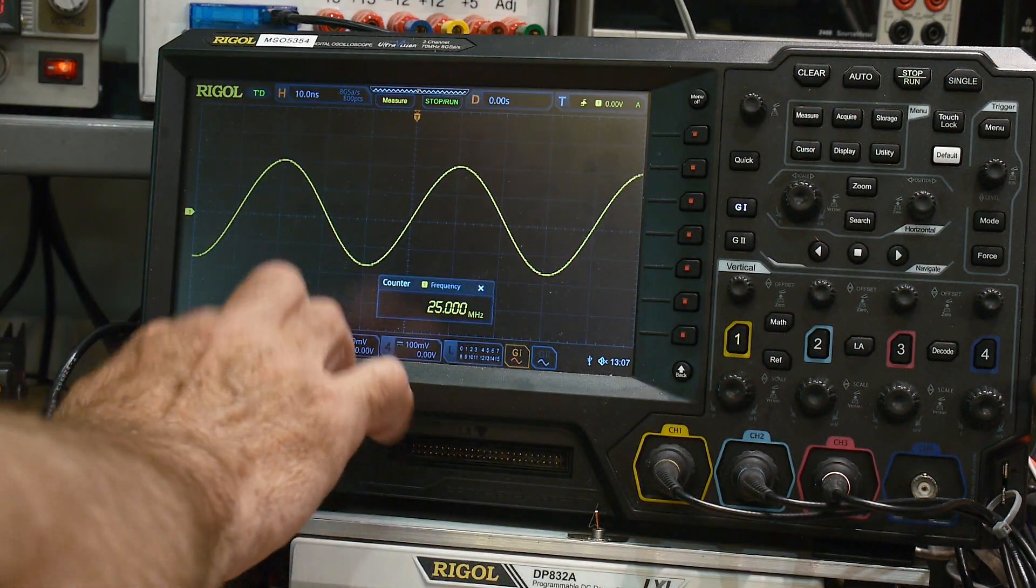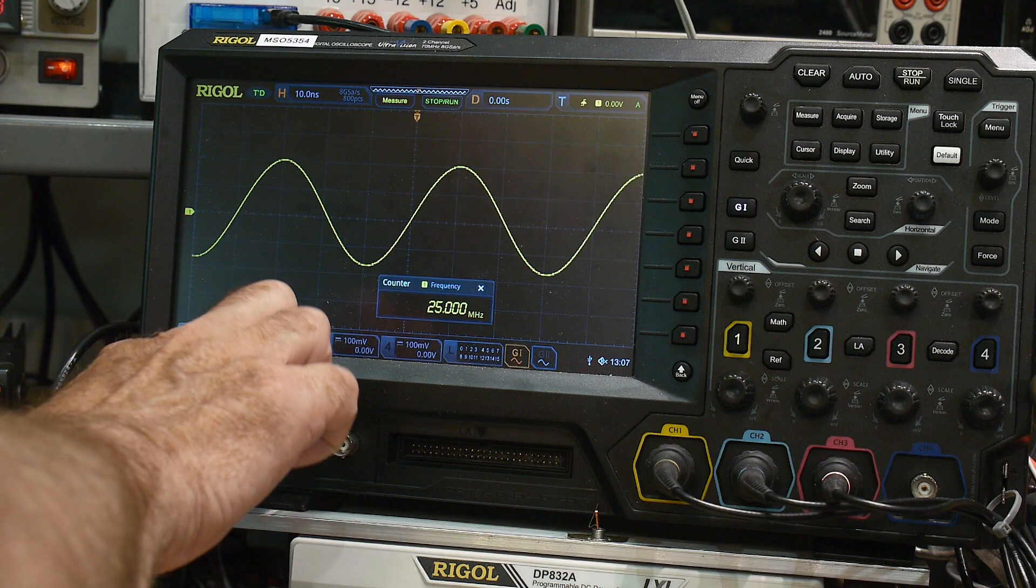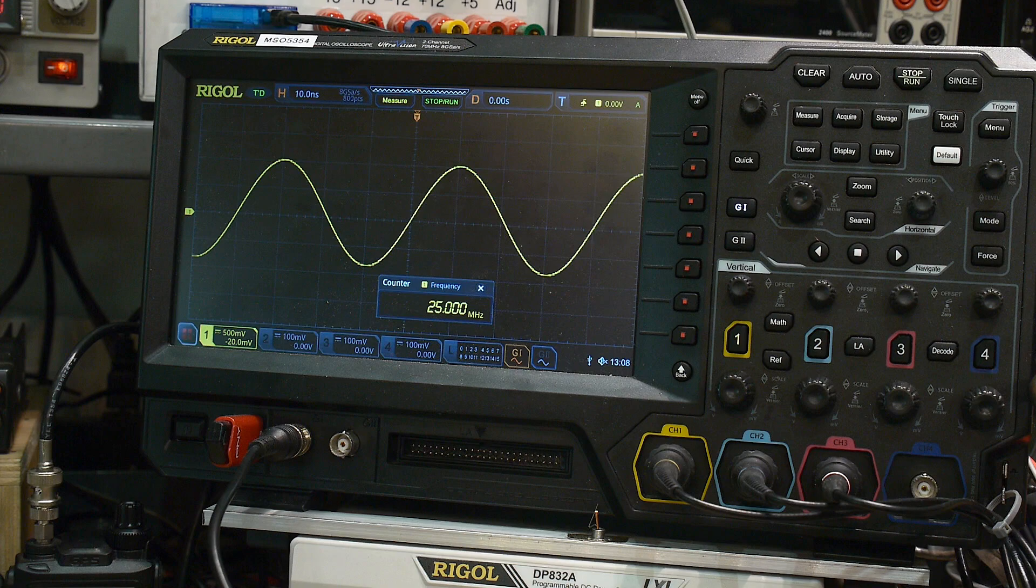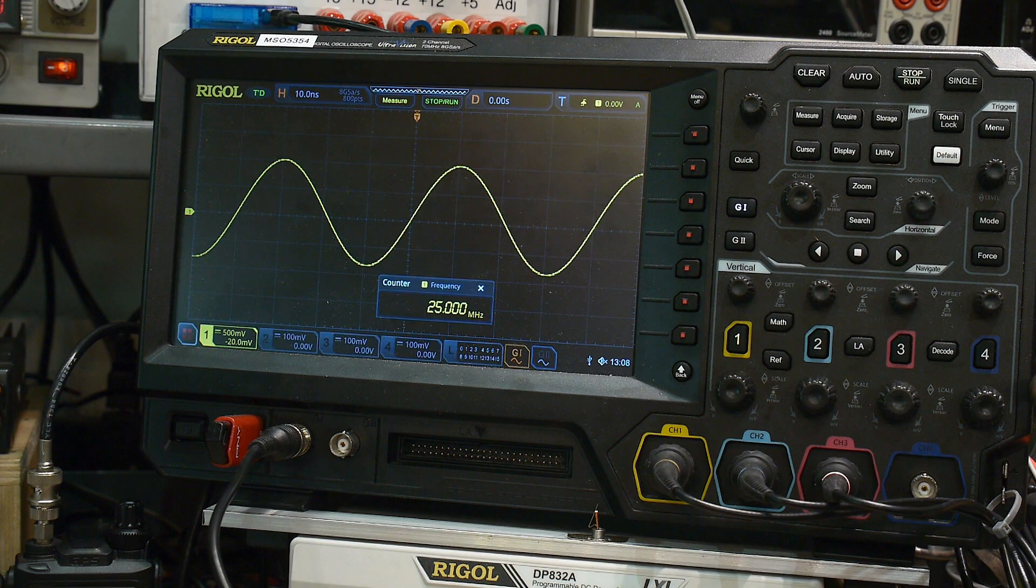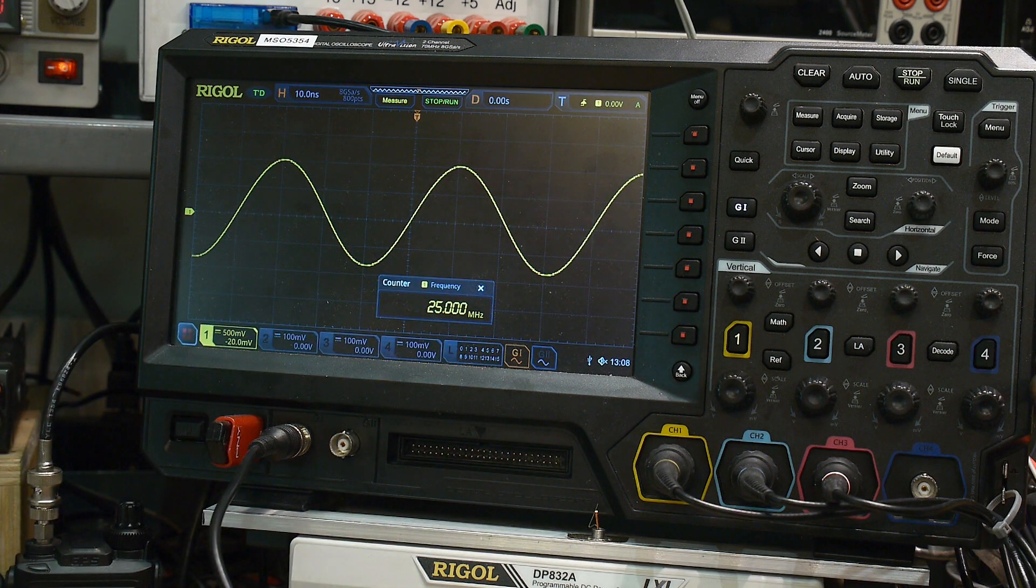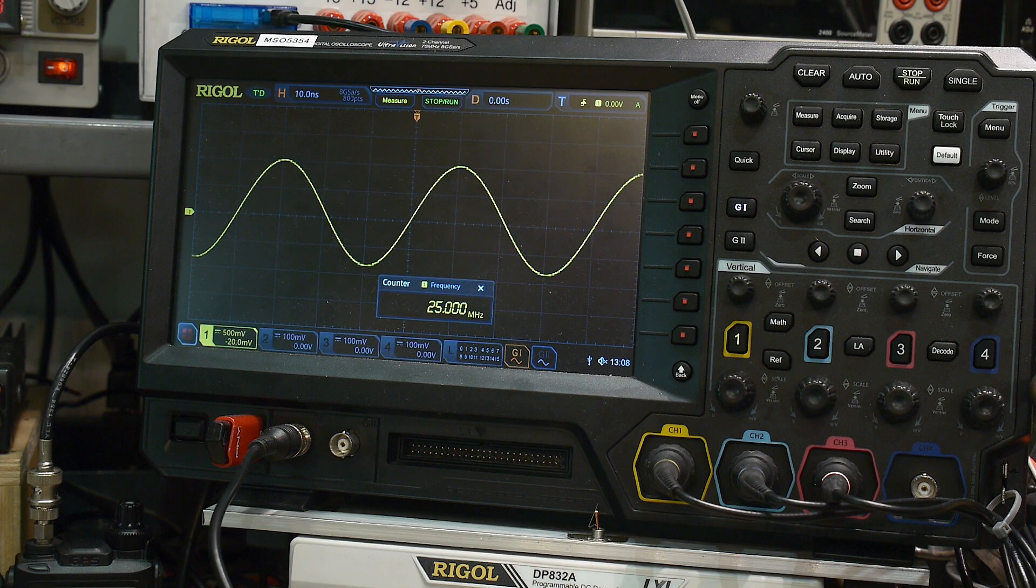The output is 500 millivolts per scale, so one volt peak to peak. It started as 100 millivolts peak to peak, now it's one volt peak to peak. We're running at 25 megahertz, so we have a gain bandwidth of 250 megahertz. This guy is screaming.